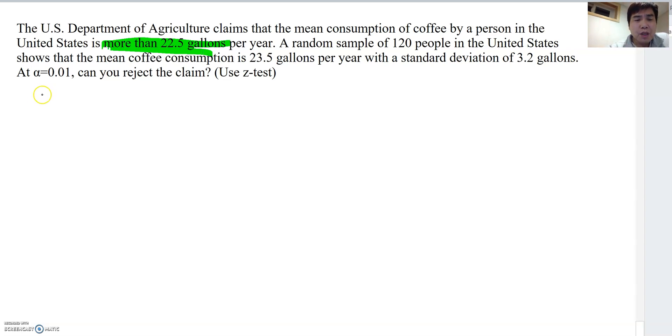Therefore, we can make HA: mu is bigger than 22.5 gallons, and then H0: mu is less than or equal to 22.5 gallons. And that's their claim.